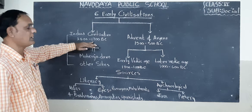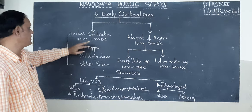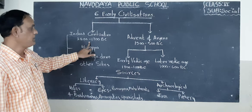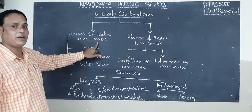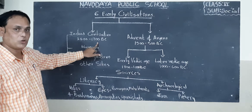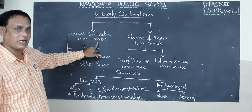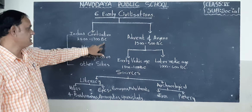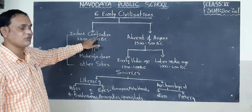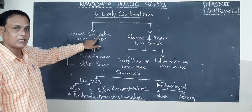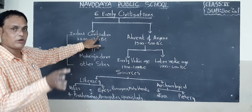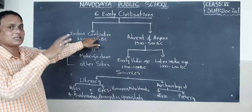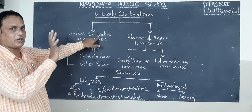The Indus civilization flourished between the years 2500 BC to 1700 BC. That is the period of Indus Valley civilization, which flourished in our country around North India and some part of Pakistan.